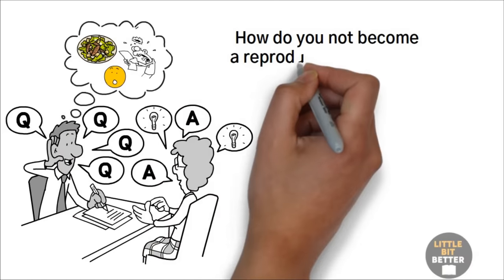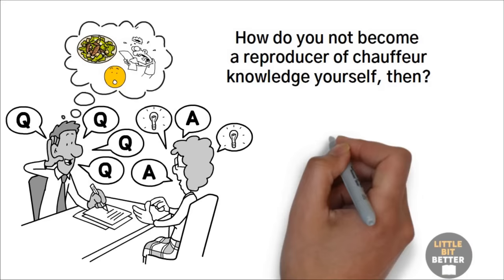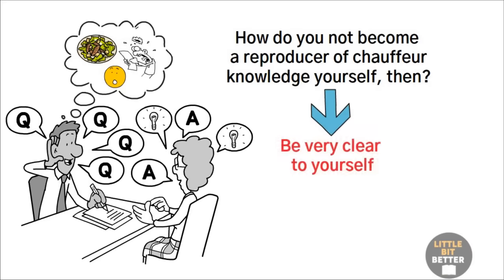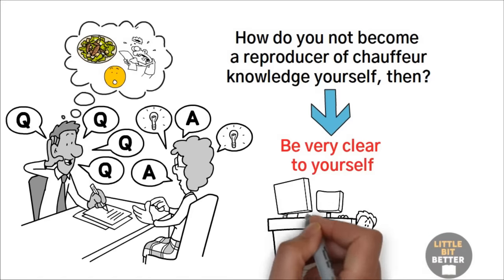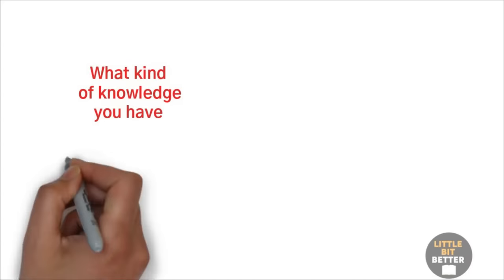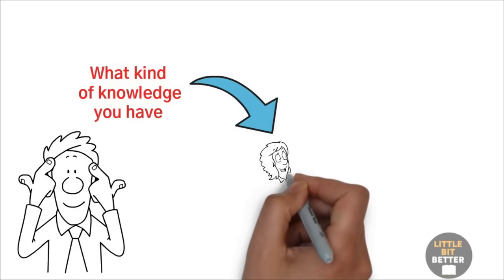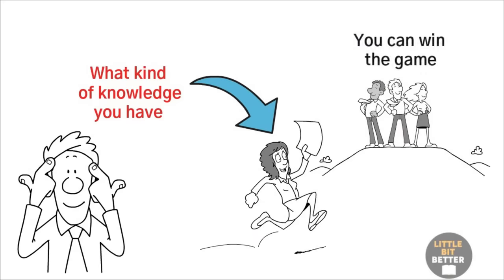How do you not become a reproducer of chauffeur knowledge yourself then? Easy. Stick within your circle of competence. Be very clear to yourself about what you know and can talk, teach about, and what you don't understand enough. Don't be afraid to admit you don't know. Once you understand what kind of knowledge you have, stick to it. It's powerful to play with your circle of competence. That's what guarantees you can win the game.